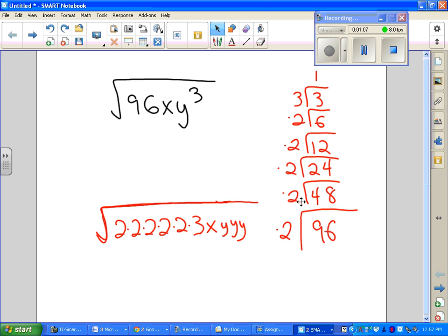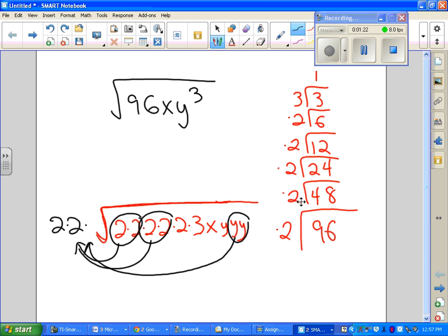All right, we're almost done. Next step is to circle all the pairs, and for every pair you get, you put it outside. Separate it by the multiplication sign, and it looks like there's one y.